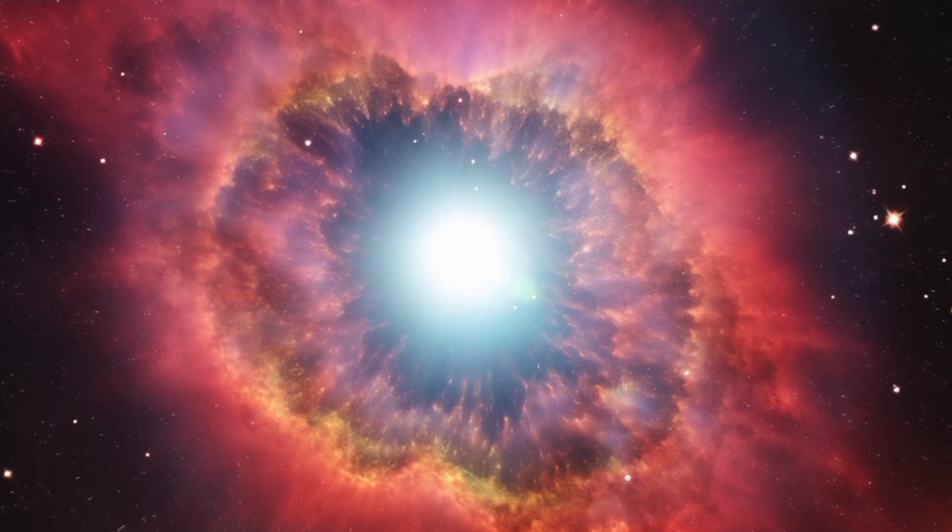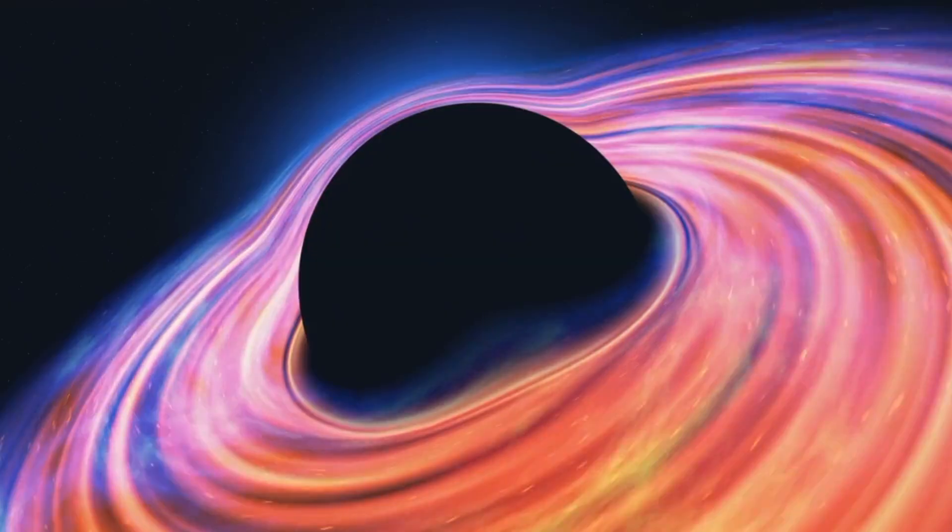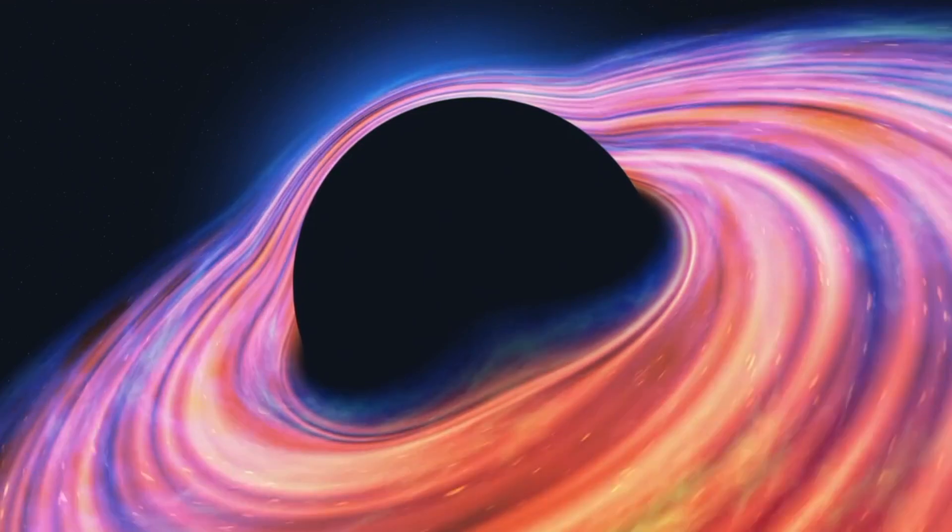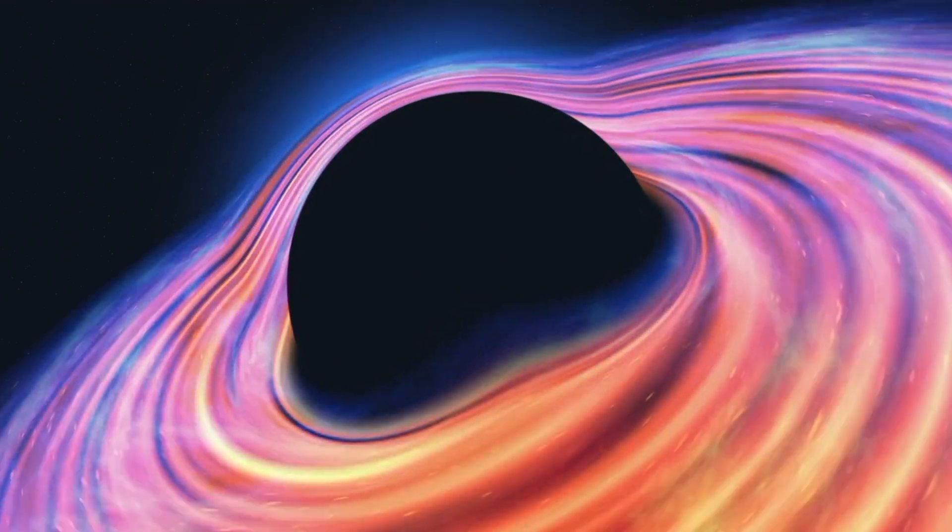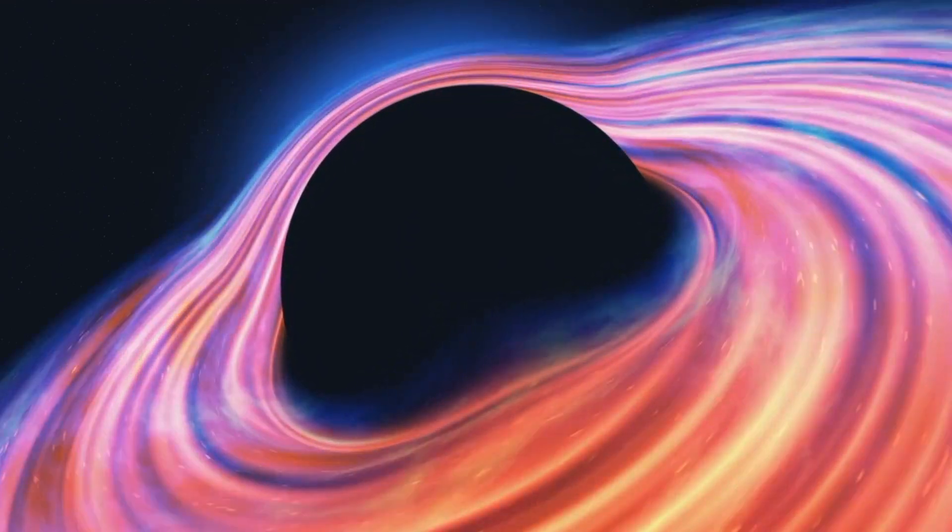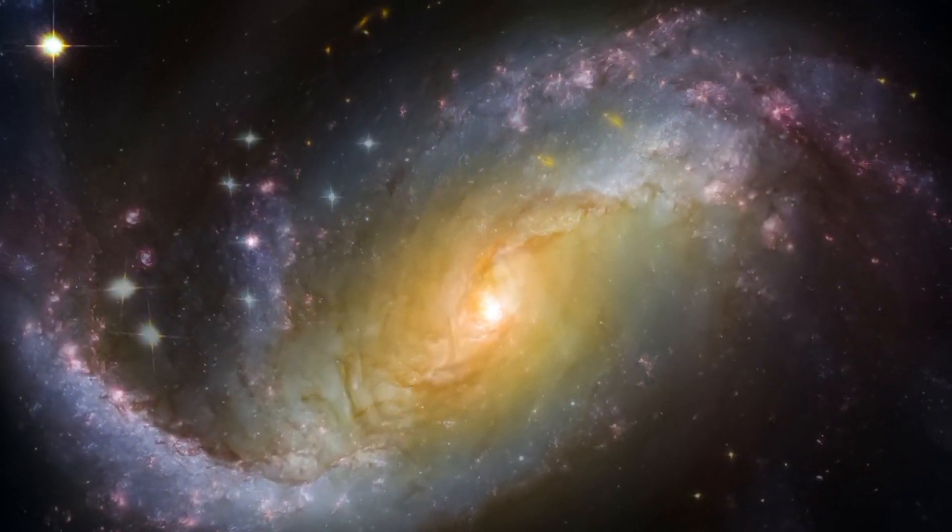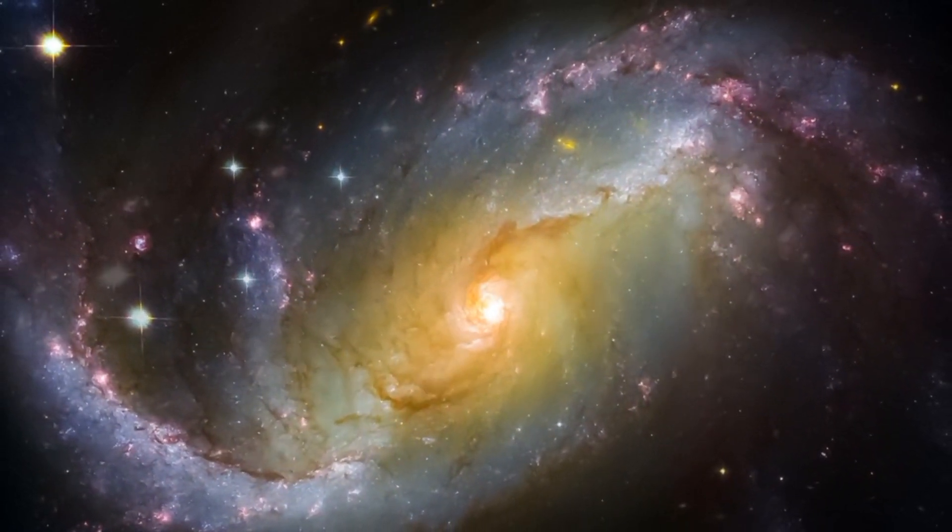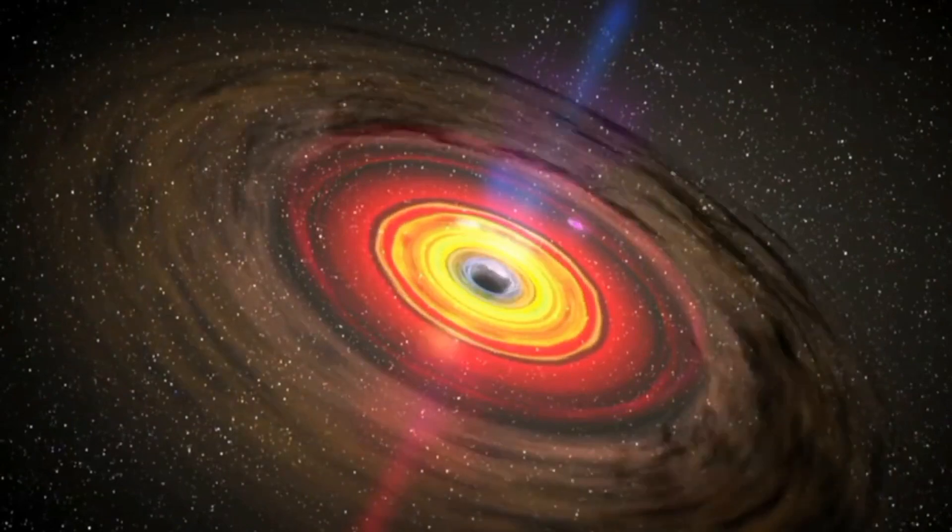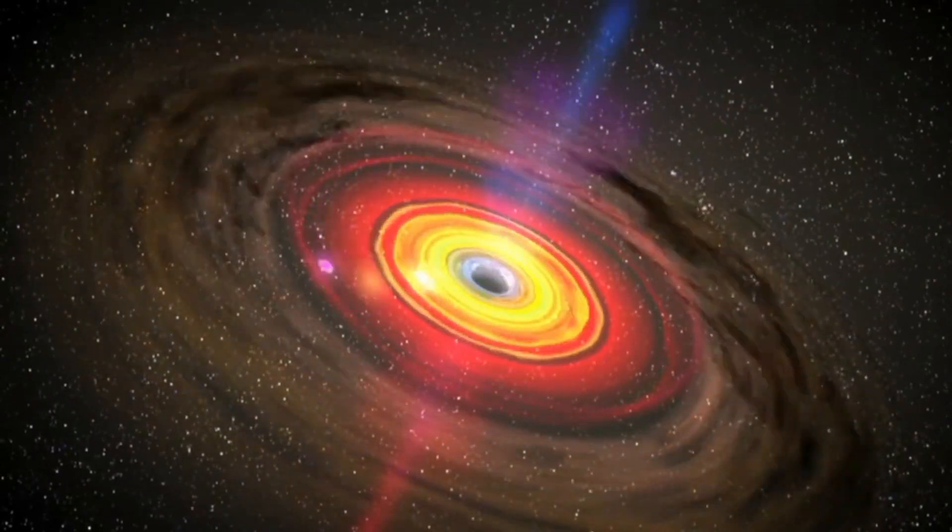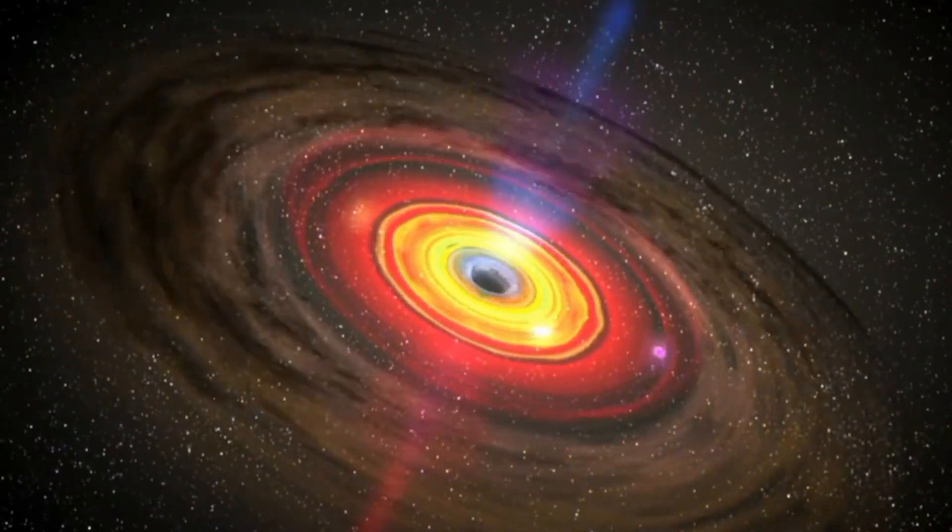A coronal mass ejection, CME, which happens frequently on our sun, is a process where a part of the sun's tenuous outer atmosphere, the corona, is blown away. However, Betelgeuse ejected 400 times more mass than a normal scene, hence apparently creating a haze of hot gas that the star produced and briefly obscured some of the star's light, causing the odd dimming of Betelgeuse.